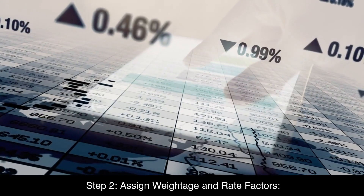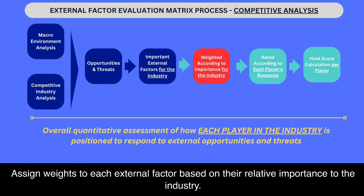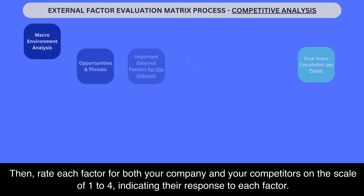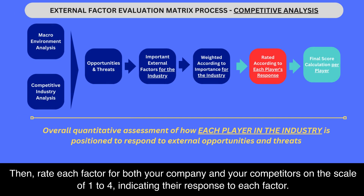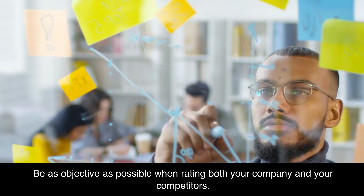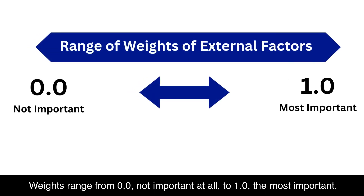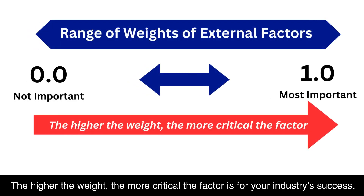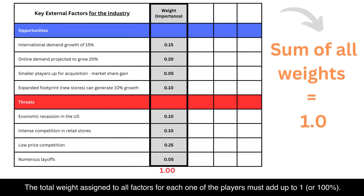Step 2: Assign weightage and rate factors. Assign weights to each external factor based on their relative importance to the industry. Then, rate each factor for both your company and your competitors on a scale of 1 to 4, indicating their response to each factor. Be as objective as possible when rating both your company and your competitors. Weights range from 0.0 (not important at all) to 1.0 (the most important). The higher the weight, the more critical the factor is for your industry's success. The total weight assigned to all factors for each player must add up to 1, or 100%.